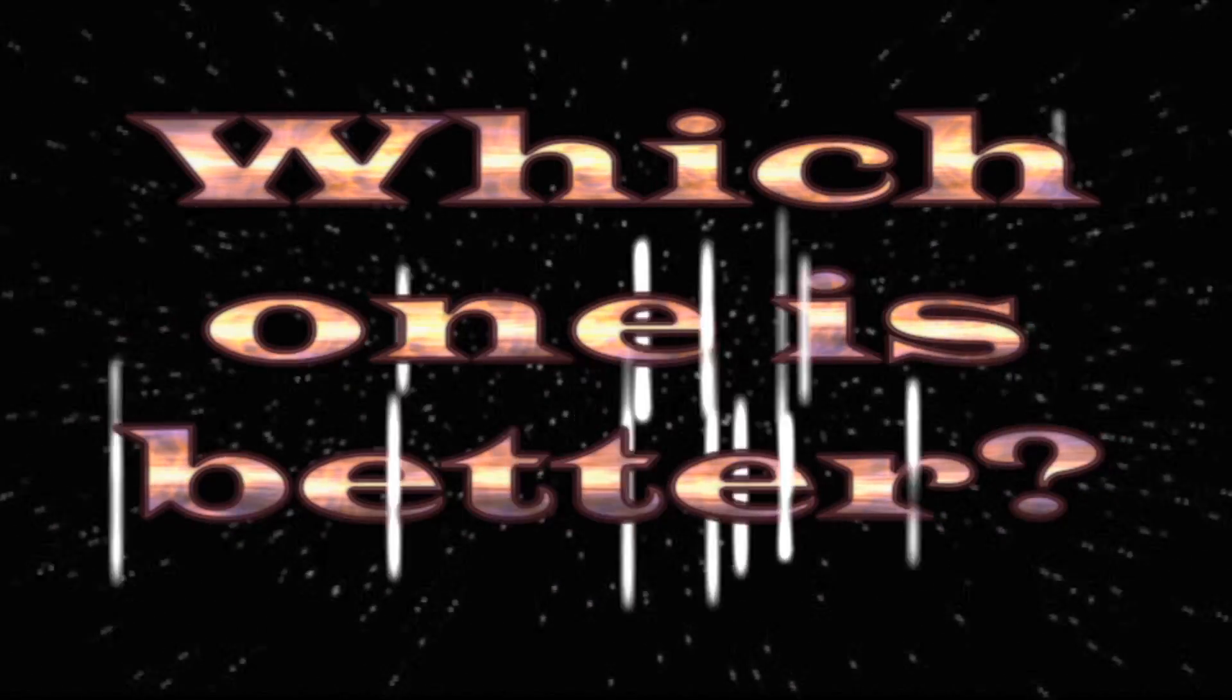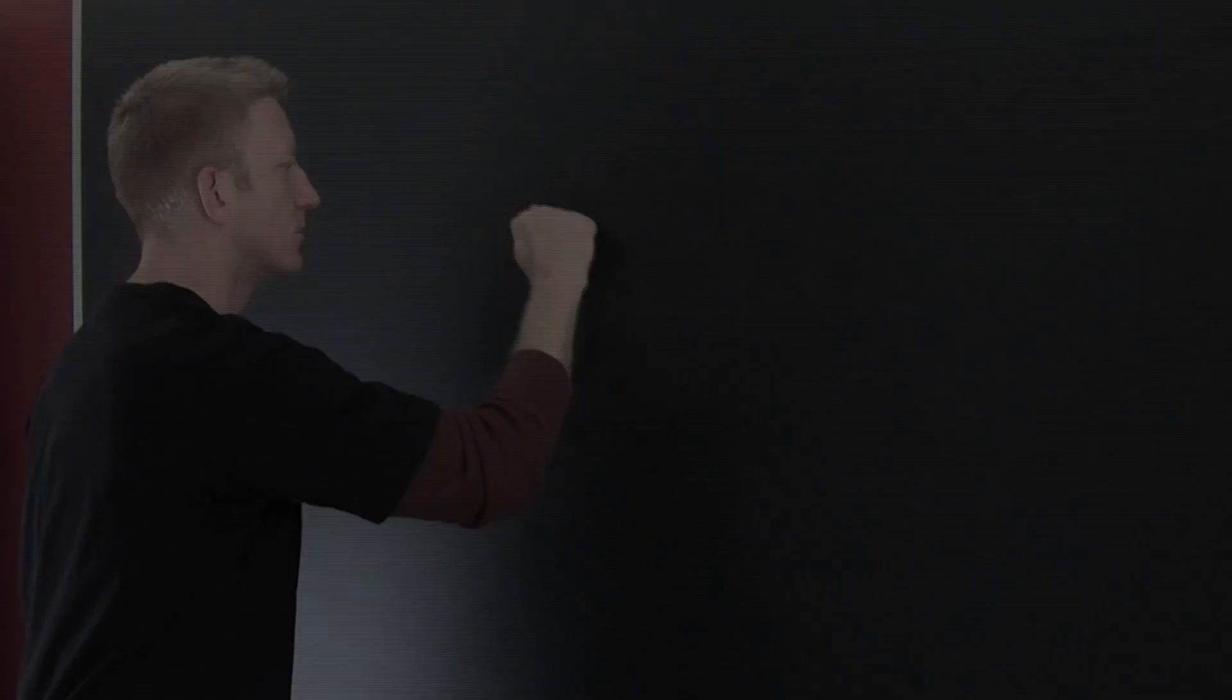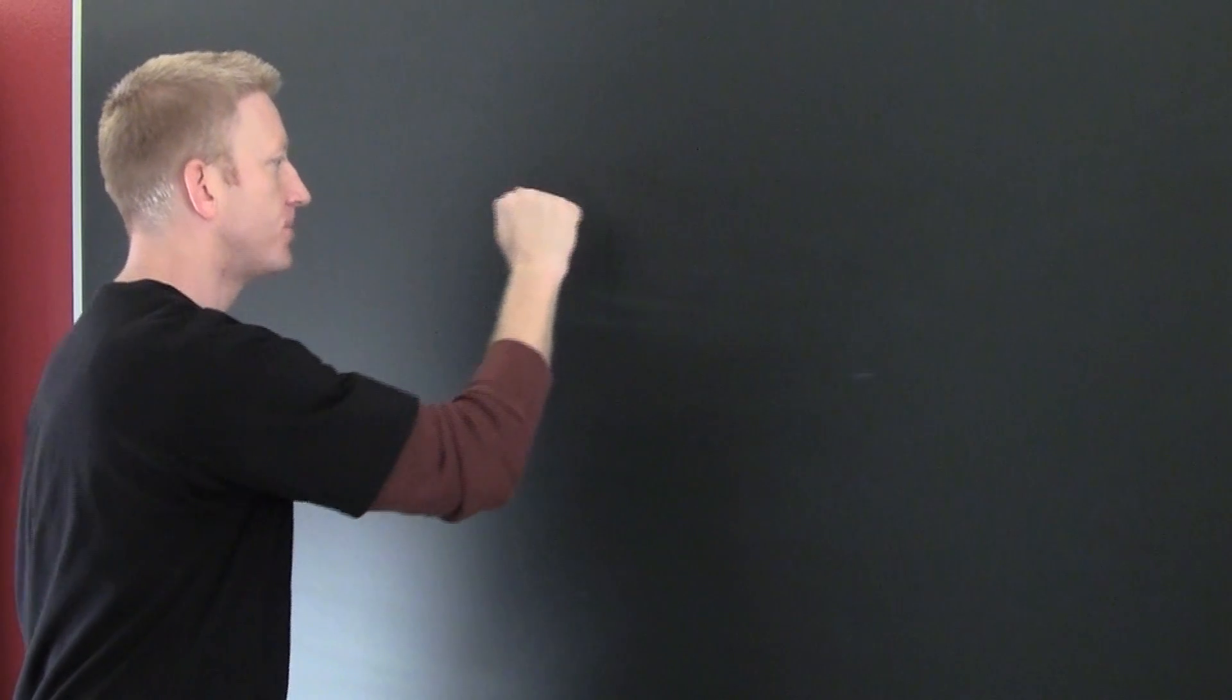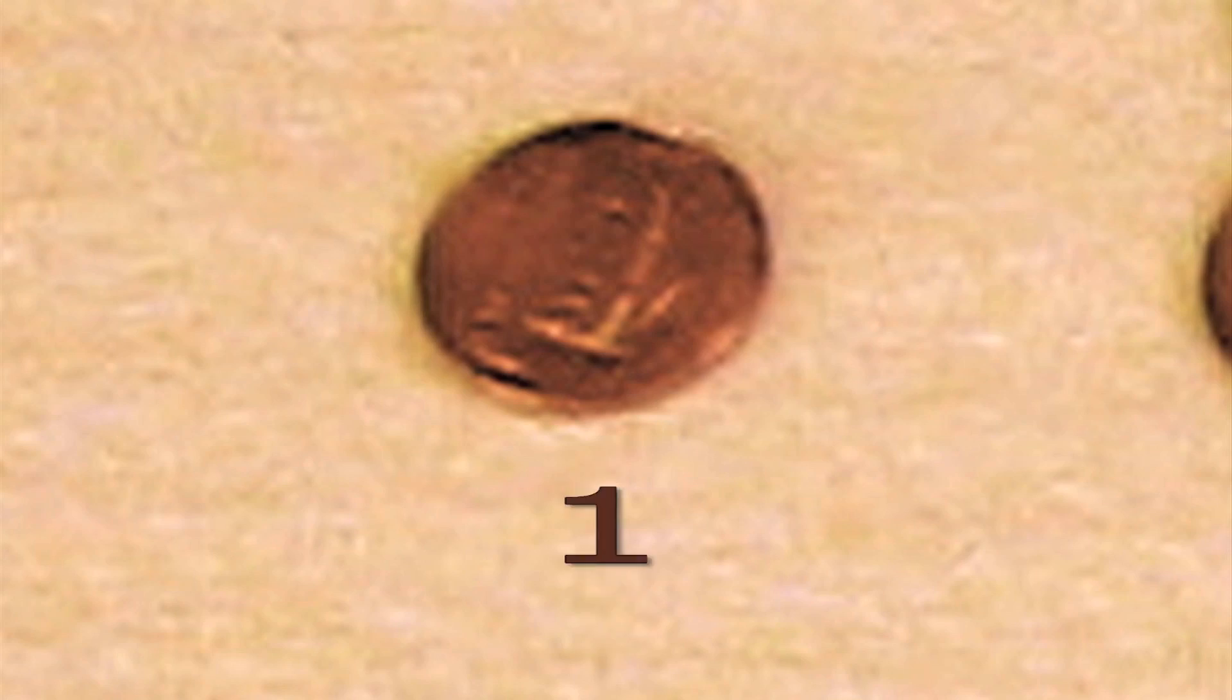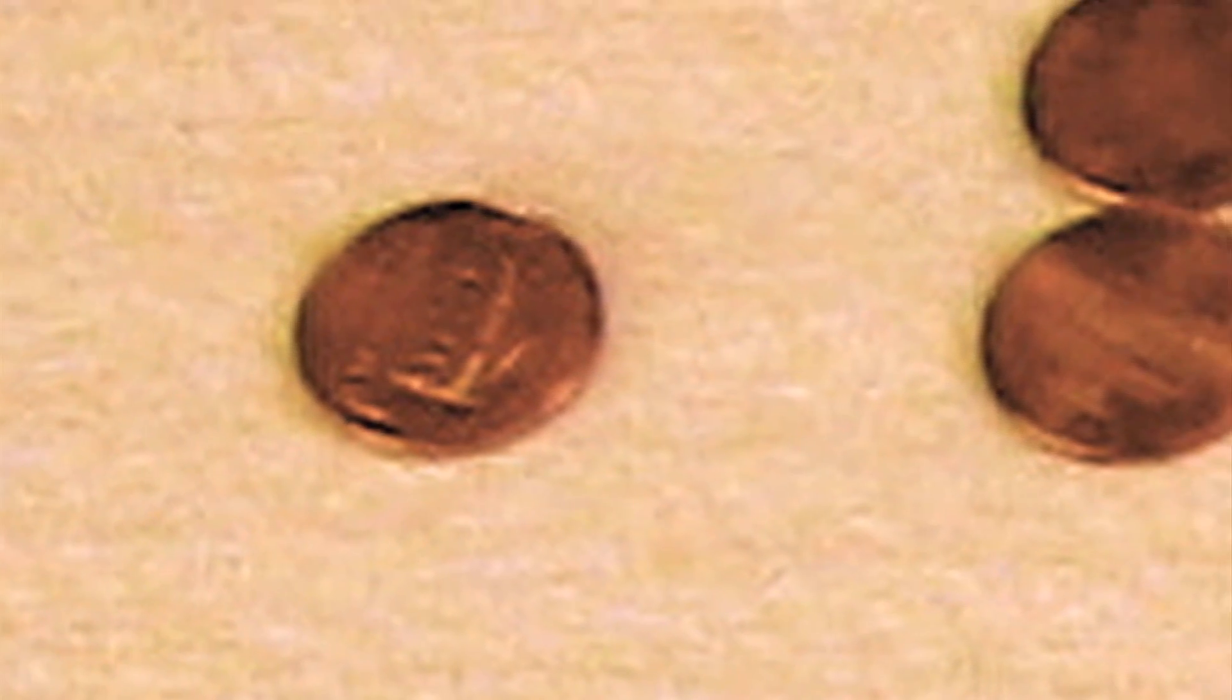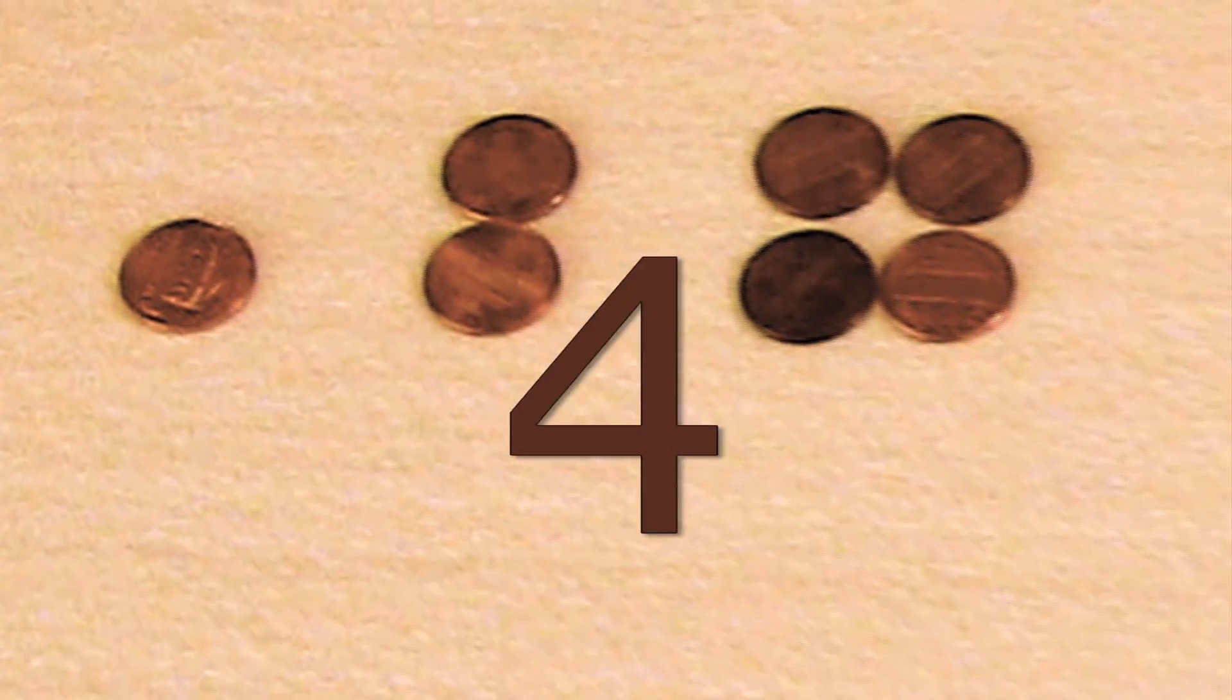So I ask you, which one's better? The million today or the pennies? Here's the idea about the pennies: you start with one, then you get two, then you get four, then you get eight, then you get sixteen, thirty-two...